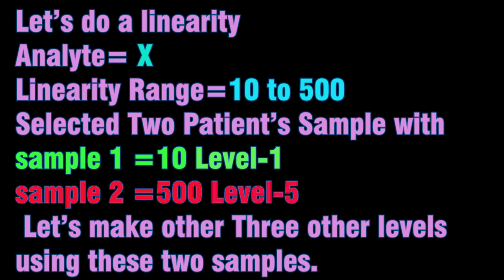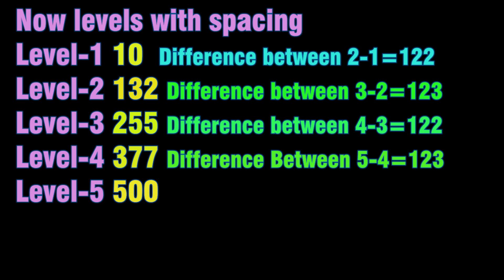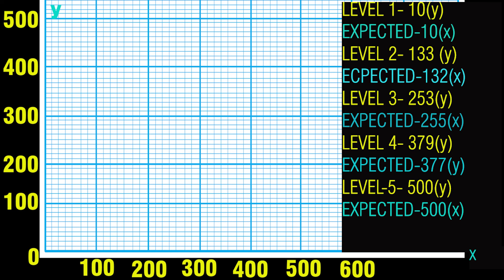Samples should be run in random order along with other samples, after checking that the instrument is calibrated and in control. After running the samples at five levels, take the mean of each sample and check for precision of the instrument. These results will be within total allowable error. Plot the sample value on the y-axis with the true value on the x-axis for visual review.